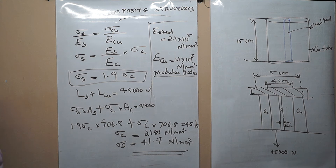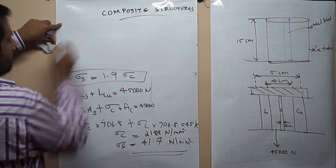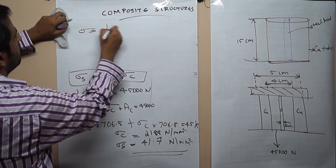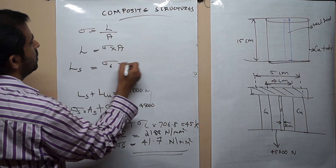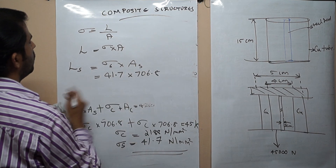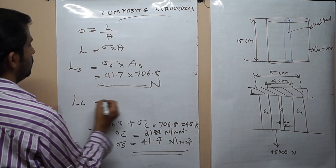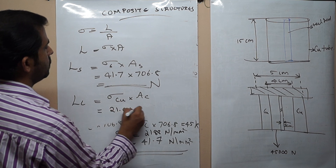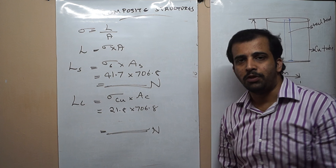Now we find the load acting on each material. Load on steel equals stress on steel into area of steel: 41.7 into 706.8 Newton. Load on copper equals sigma_C into area of copper: 21.8 into 706.8 Newton. That's how you solve problems for composite structures.